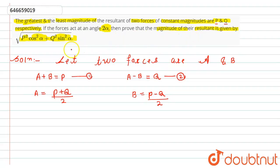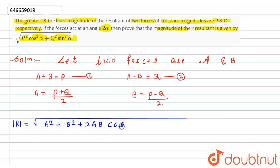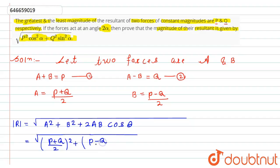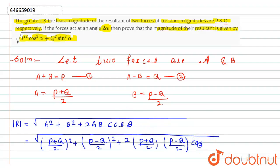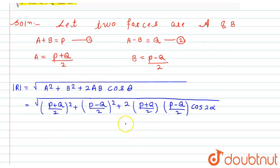Now we have to find — that is, prove — the magnitude of their resultant. The magnitude of the resultant is given by: modulus of R equals square root of a squared plus b squared plus 2ab cos theta. Substituting, a is (p+q)/2 and b is (p−q)/2, and the angle between them is twice alpha, so this becomes cos of 2 alpha.